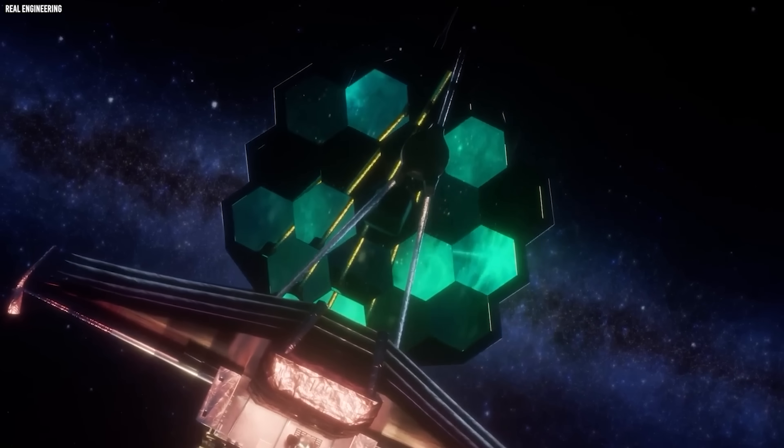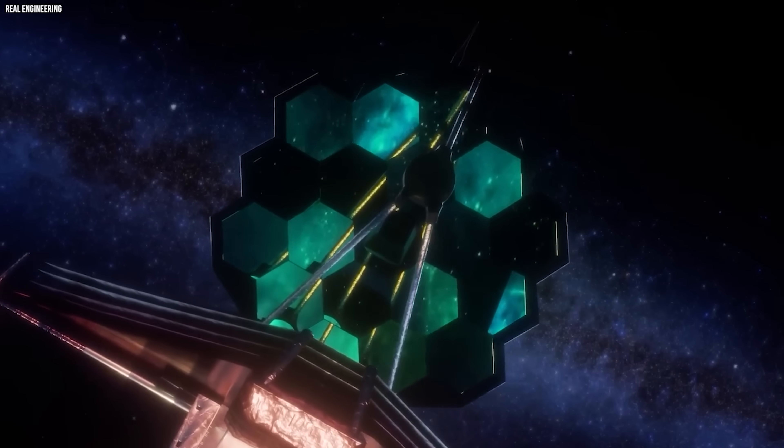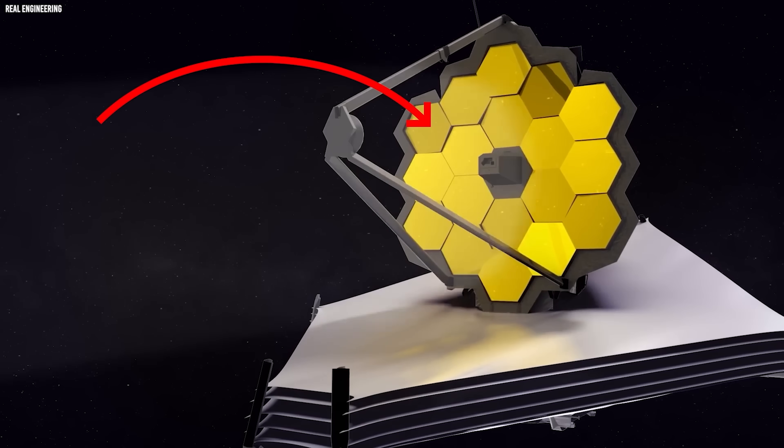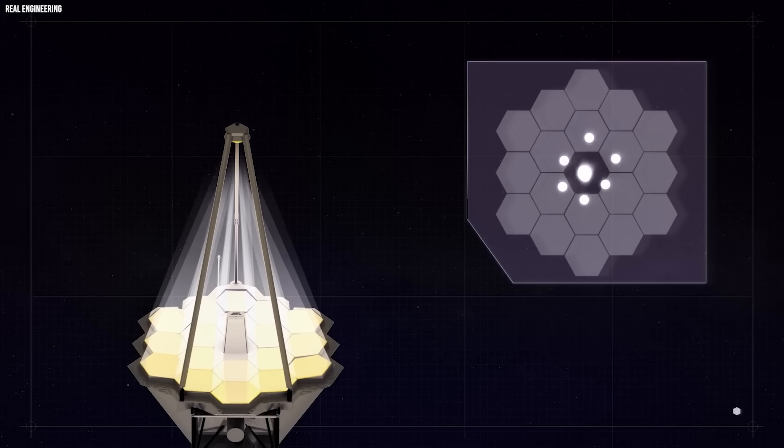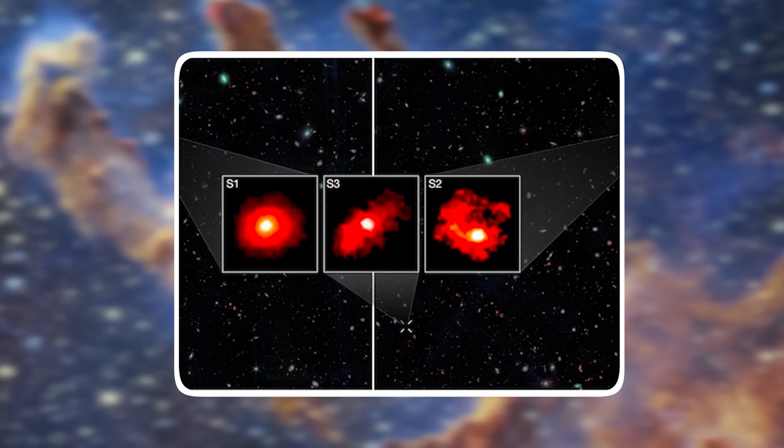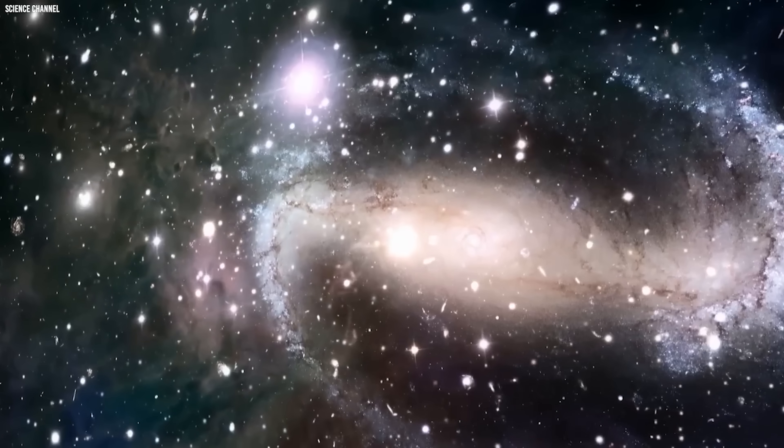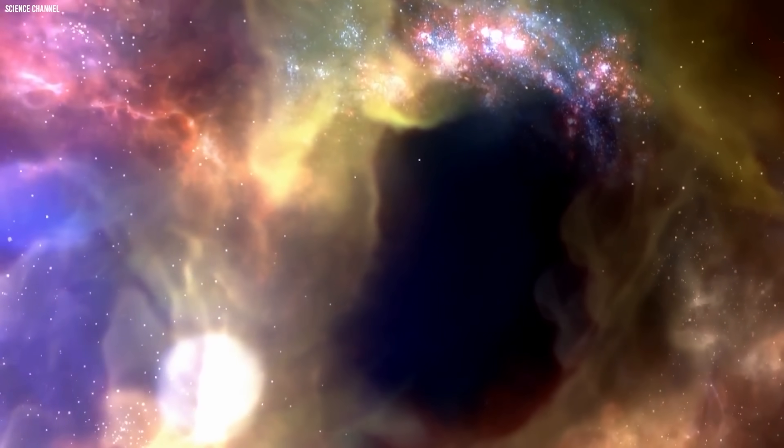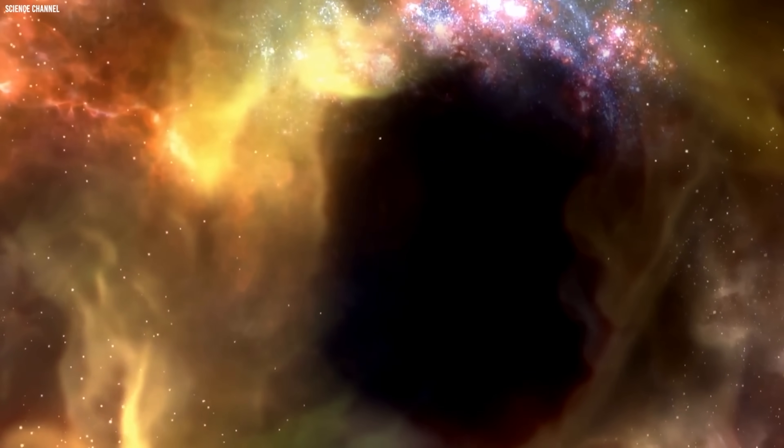This is exactly where the James Webb Space Telescope changes everything. With its massive golden mirror and infrared vision, Webb can pierce through thick cosmic dust and capture the faint, reddened glow of the universe's first galaxies. And what it reveals doesn't simply add details to our cosmic picture. It completely redraws the boundaries of what we thought was possible.